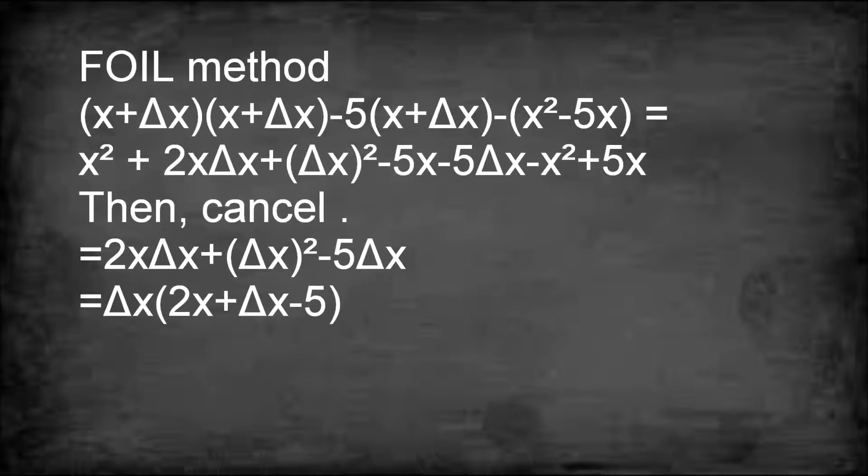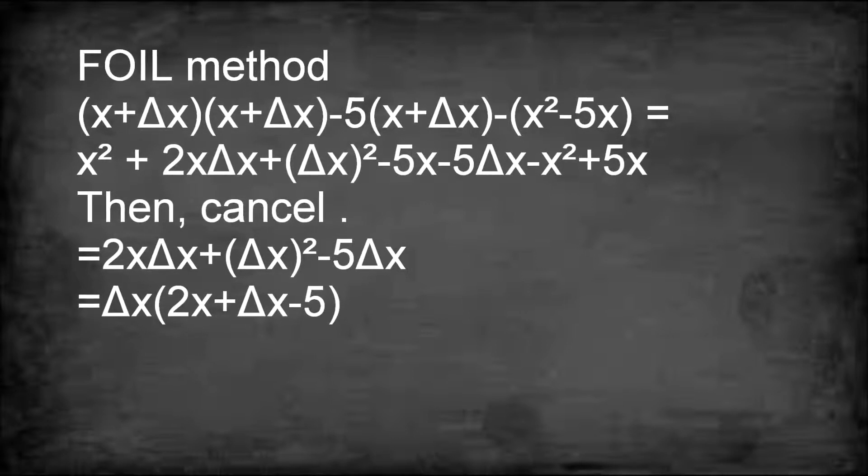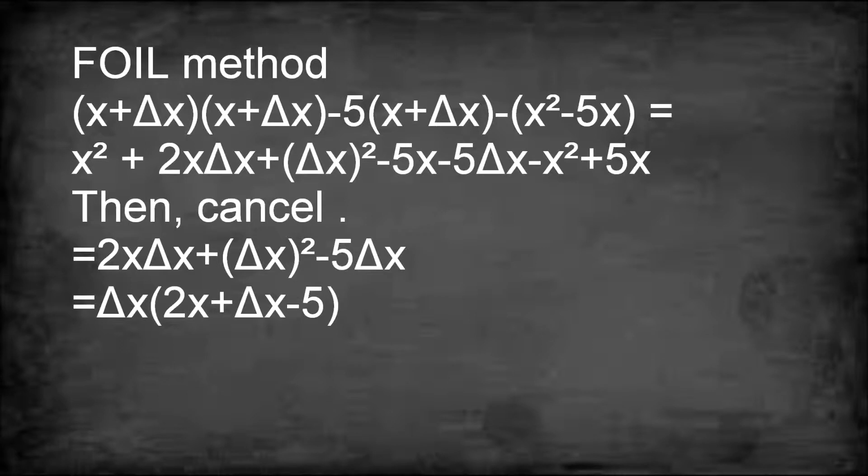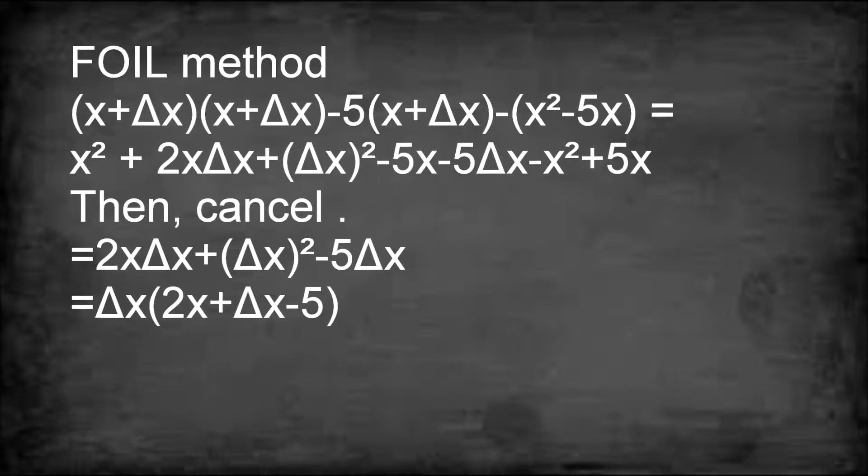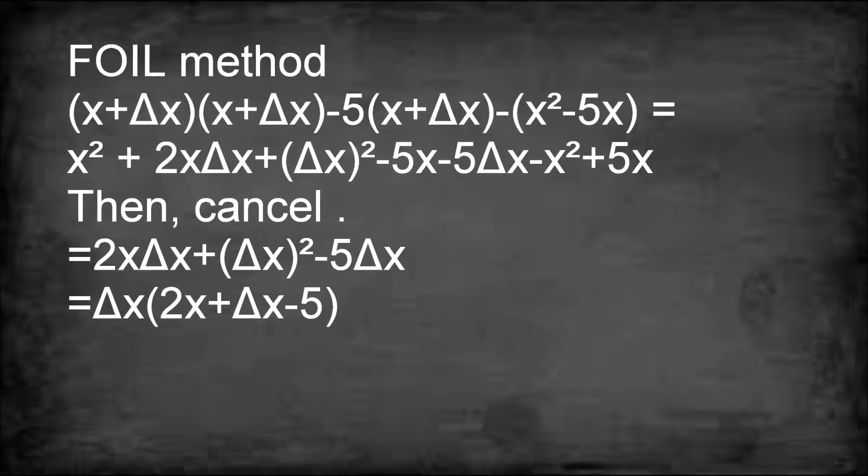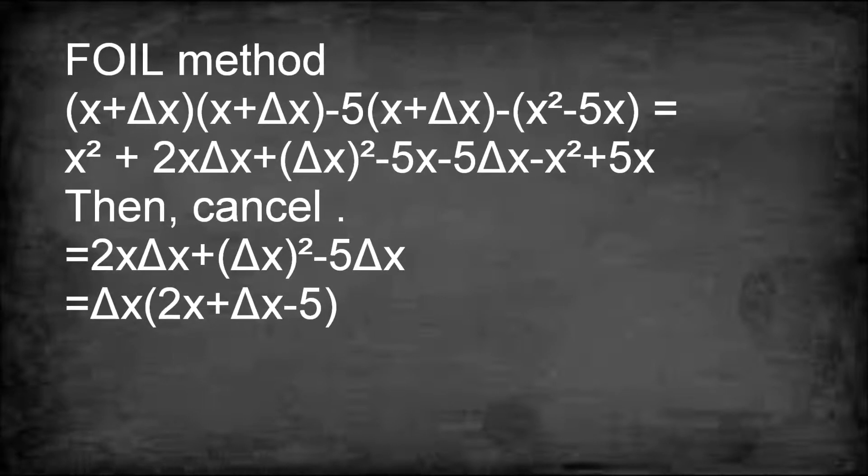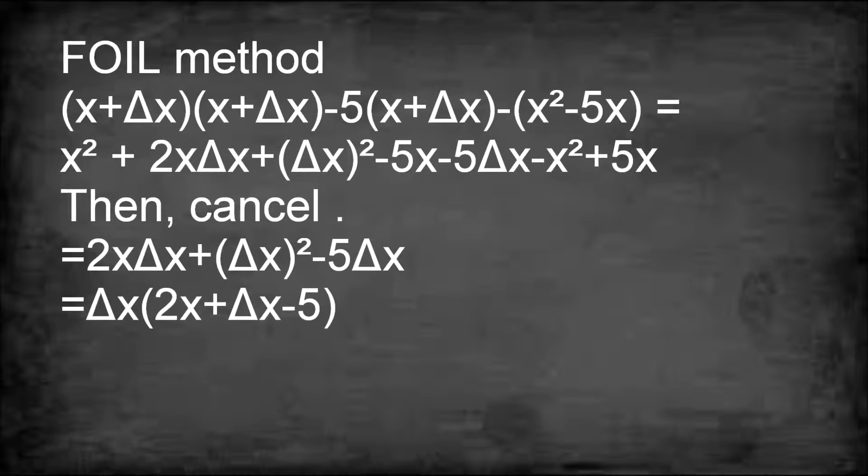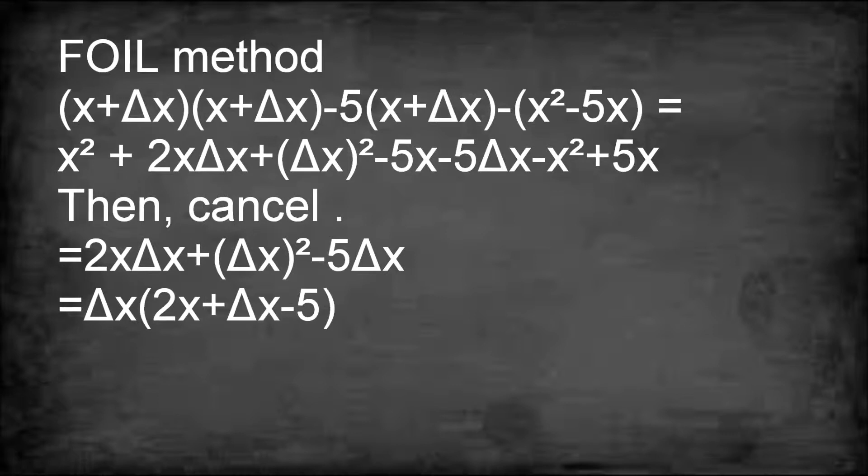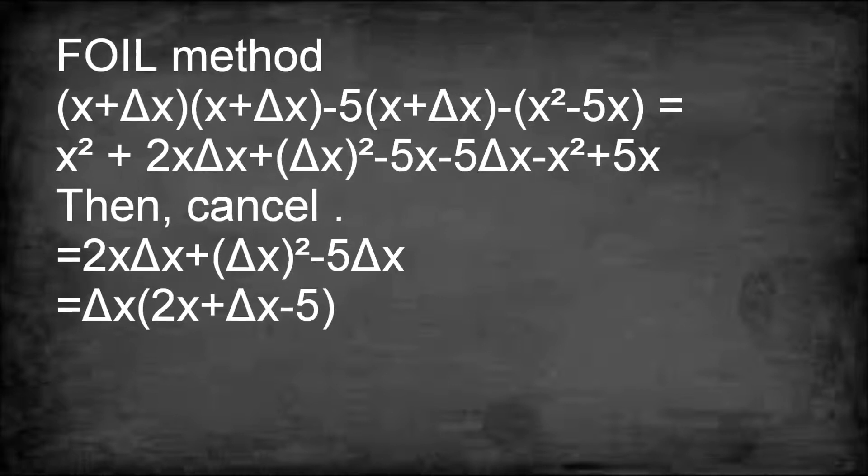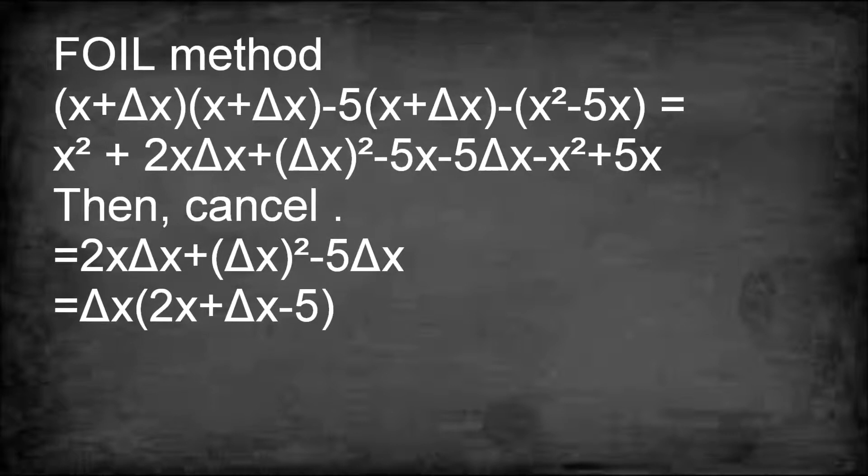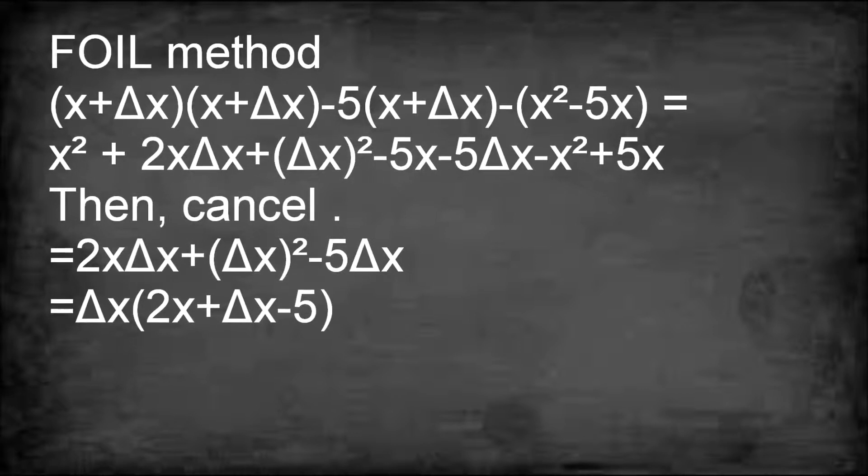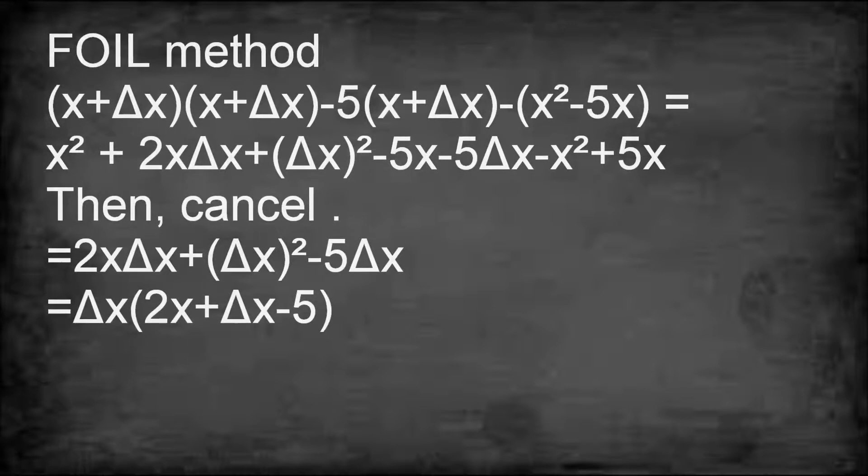So the result is x squared plus 2x delta x plus delta x squared minus 5x minus 5 delta x minus x squared plus 5x. Now cancel the pairs of numbers with opposite signs: x squared and negative x squared, negative 5x and positive 5x. So the answer is 2x delta x plus delta x squared minus 5 delta x.